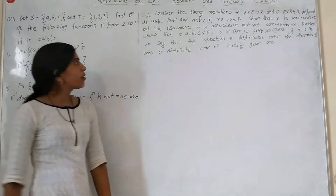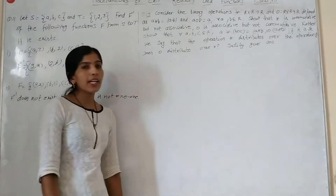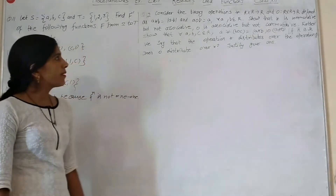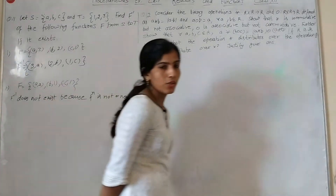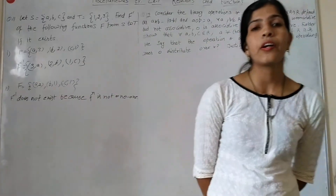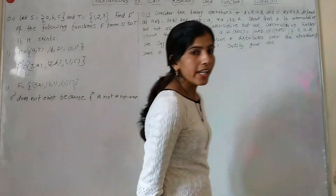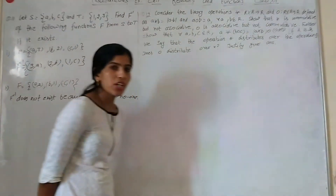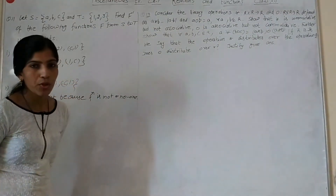Question 12: Consider binary operations on R to R. There are two operations: star and O. We check which are associative and which are commutative.